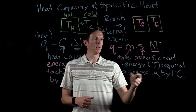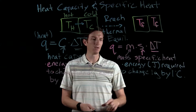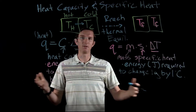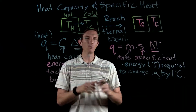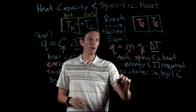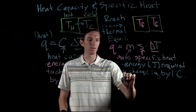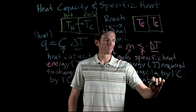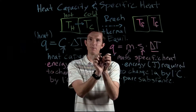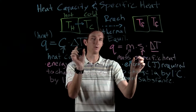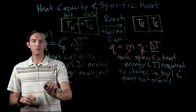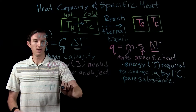Specific heat is an intensive property because it's given per one gram, while heat capacity is an extensive property that depends on the amount present. Specific heat is useful when dealing with a pure substance — one gram of it takes the same amount of heat regardless of sample. Heat capacity is more useful when dealing with a mixture or multiple components.